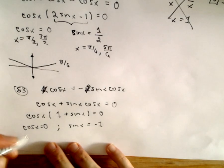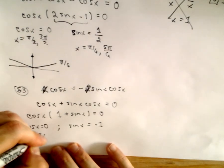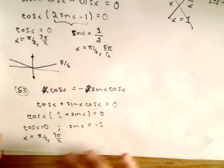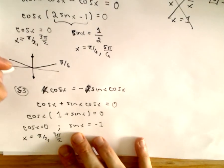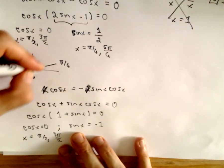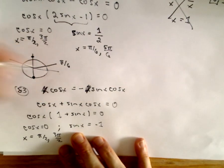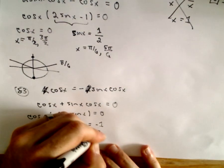Well, we just saw that cosine of x equals 0 when x is pi over 2 or 3 pi over 2. Sine of x is going to equal negative 1 at the bottom of the unit circle. And again, that's just going to correspond to x equals 3 pi over 2.